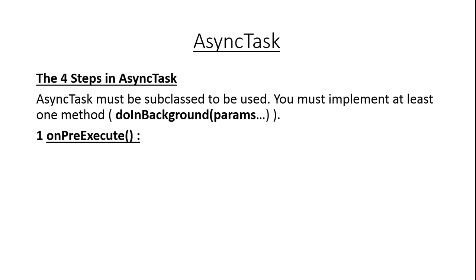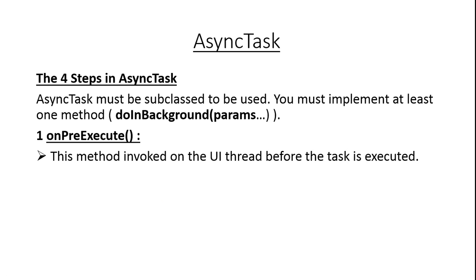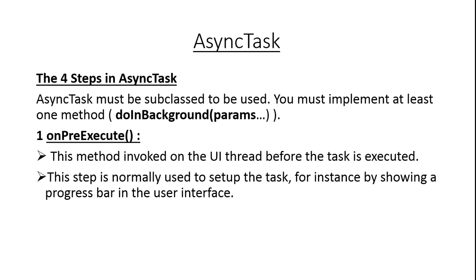Here is the first method within AsyncTask: onPreExecute. For executing an AsyncTask, you have to create an object of the class that extends AsyncTask, and using that object you call the execute method. When you call the execute method, the Android system will call the onPreExecute method. This method is invoked on the UI thread before the task is executed. This step is normally used to set up the task — for instance, by showing a progress bar in the user interface. You can make a progress bar visible in this method.